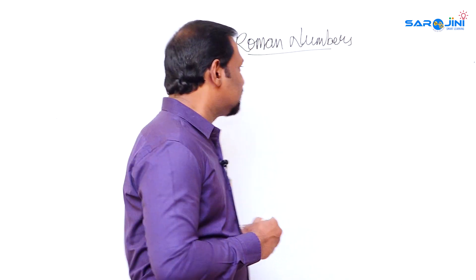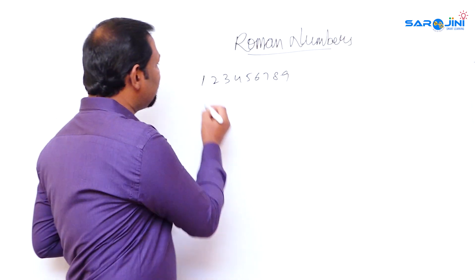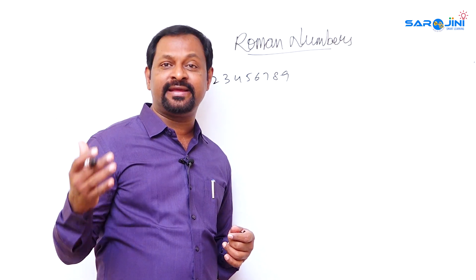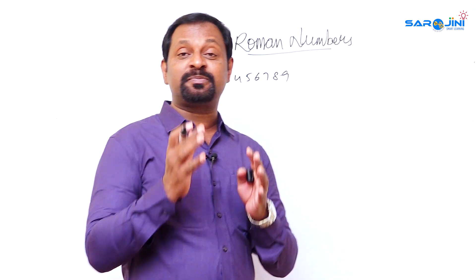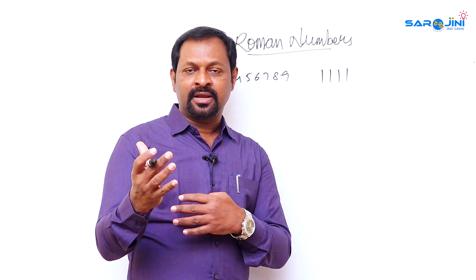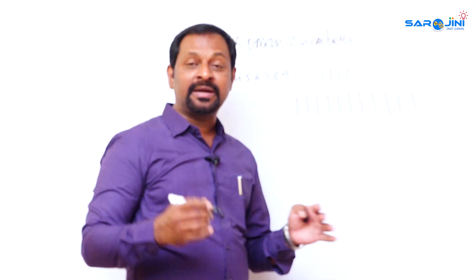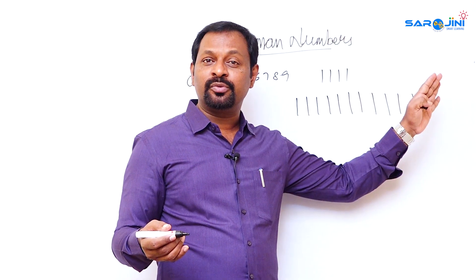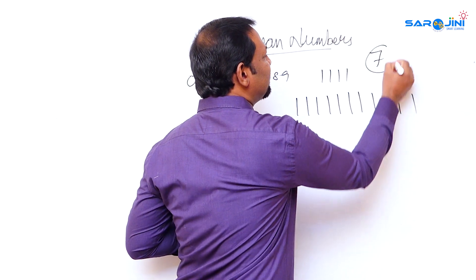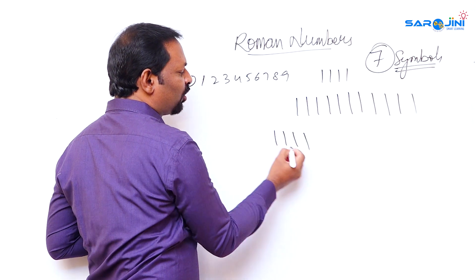As we know, 1 through 9 are called Arabic numbers, and combined with zero they are called Indo-Arabic numbers. But in Roman times, before these numbers existed, people used a tally system — drawing lines for counting during barter and exchange of goods. As numbers grew large, counting those lines became difficult, so they created special symbols.